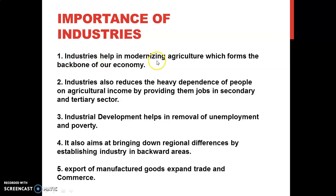Industries help in modernizing agriculture. As we know, most of the people are living in rural areas and their primary occupation is agriculture. Nowadays, modern machines are used in agriculture sector and industries are helping in providing modern machines to the agriculture sector. Industries are manufacturing modern machines which are used in agriculture sector.